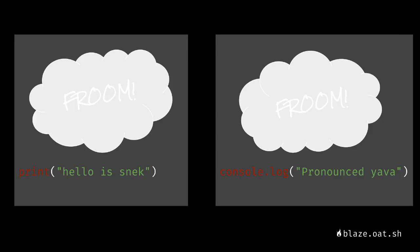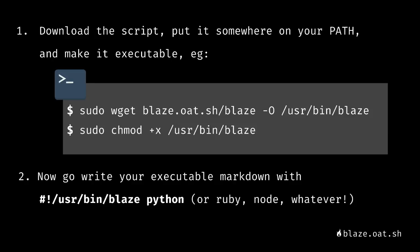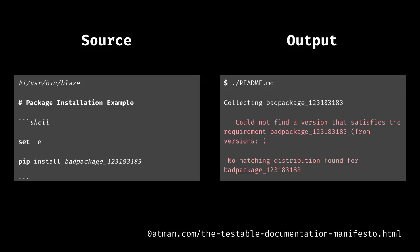What Blaze does is very simple. Blaze strips out anything that's not inside code fences, then passes the code along to the selected interpreter. It's not magic, but it's a powerful idea. It's just a short shell script with no dependencies, and I've released it under an MIT license. This means you can distribute it with your containers, embed it in your app, and run it anywhere sh can run.